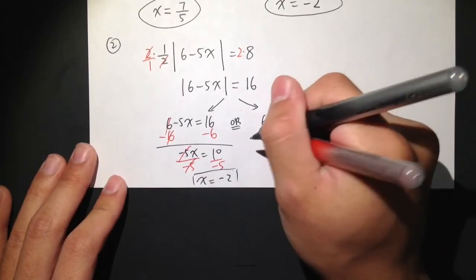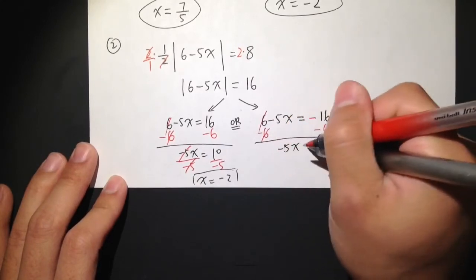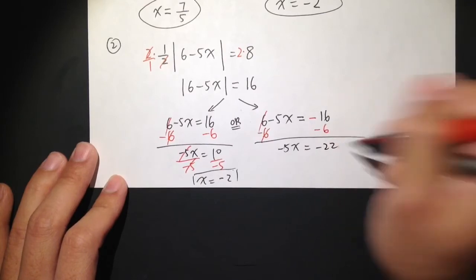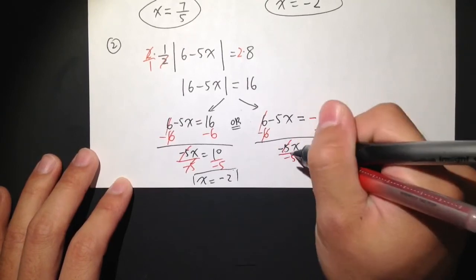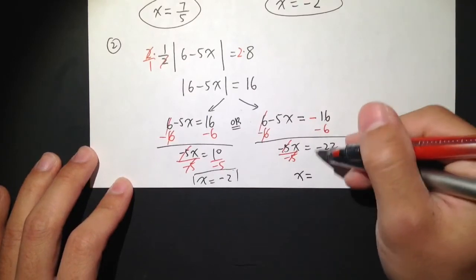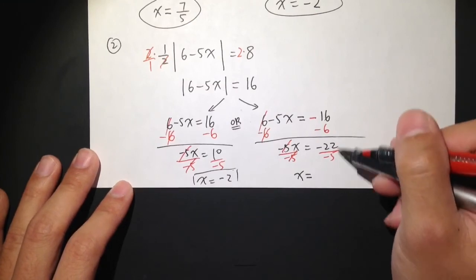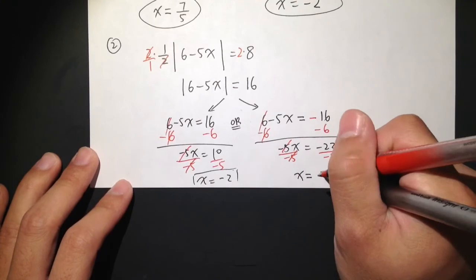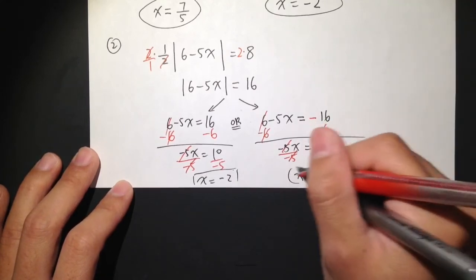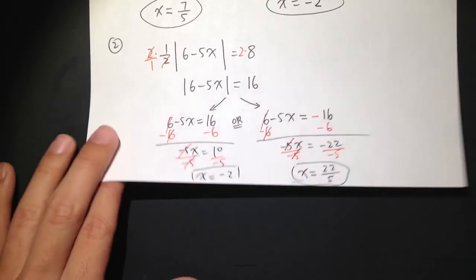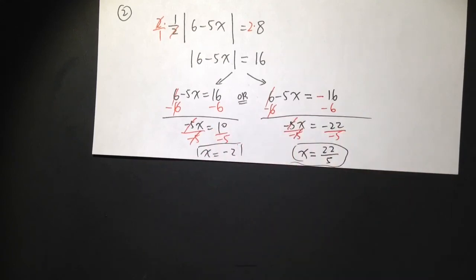For the second equation, subtract 6 from both sides — the 6 cancels — and negative 5x equals negative 16 minus 6, which is negative 22. Divide both sides by negative 5. Negative divided by negative is positive, and 22 over 5 cannot be reduced, so x equals positive 22 over 5. That's the second answer, and we circle both of them — we end up with two different answers for this equation.